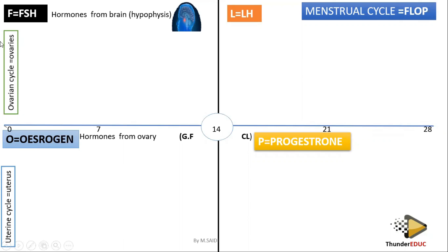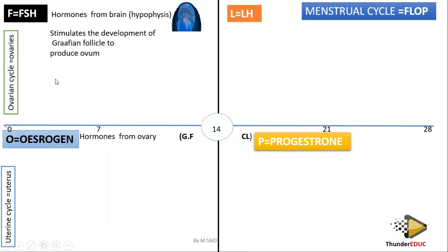This one is the uterine cycle. The ovarian cycle occurs in the ovary while the uterine cycle occurs in the uterus — so the cycle name comes from where it is happening. You now know where they are produced from. Let's look at the function of each so we can see exactly what is happening.